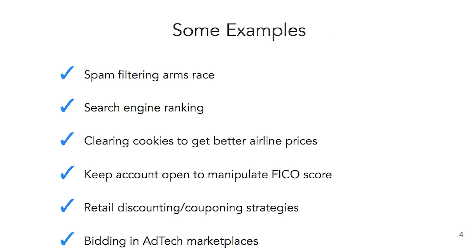What about more broadly? Another great example is the spam filtering arms race. As people who do spam filtering continue to improve their skills, they filter out more and more spam. Yet for people who find it profitable to send spam, they need to up their game and find ways around that filter, and then the filters have to turn around and compete again. Until the difficulty in getting around a spam filter is greater than the cost of finding a workaround, we're going to continue to see this fight.